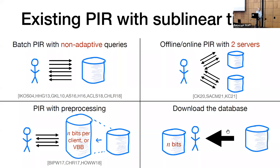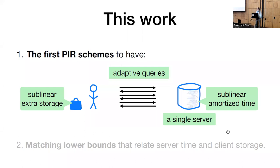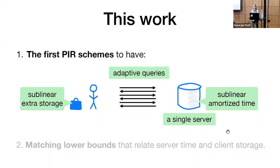The world of private information retrieval is in an undesirable state. We just saw that there are compelling applications, but we don't have any schemes that are cheap and easy to deploy. This work gives the first PIR schemes that jointly achieve a number of properties we care about in practice: our schemes require the client to communicate with only a single server, allow the client to make queries adaptively, require sublinear extra storage — specifically sublinear storage on the client side and no additional storage on the server side — and most importantly, our server runs in sublinear amortized time.